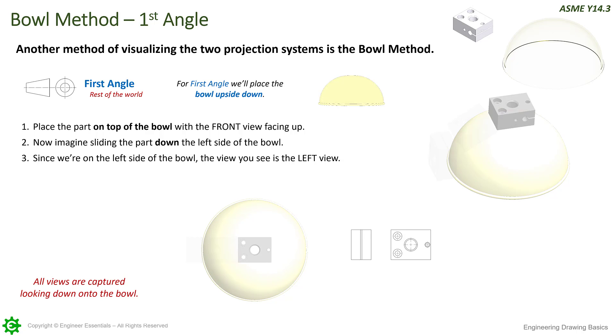So we see the slot now, whereas in the third angle we didn't see it because when it gets projected to the left it goes under. So that creates that left side view and they throw it in their drawing over there. So they reposition the part back up to the top and now they slide the bowl over or the part over to the right of the bowl and then they throw that view in there into the drawing.